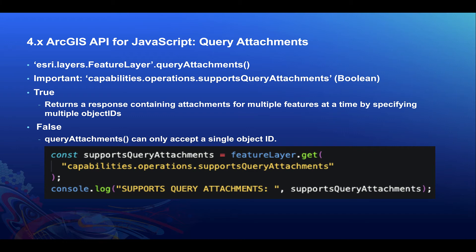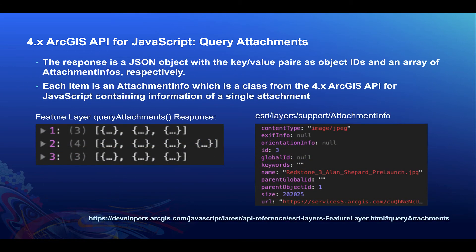Now let's take a closer look at the query attachments response. The data will be returned in JSON format with the feature object IDs as the property names and an array of attachment infos for the value. Each item in the array will contain data for a single attachment and has useful info such as the content type, orientation info, name, URL, etc. On the left-hand side you'll see the JSON response with the object IDs being 1, 2, and 3. And on the right-hand side you'll have an array of attachment infos for each object ID, including information on the content type, orientation info, ID, and name.